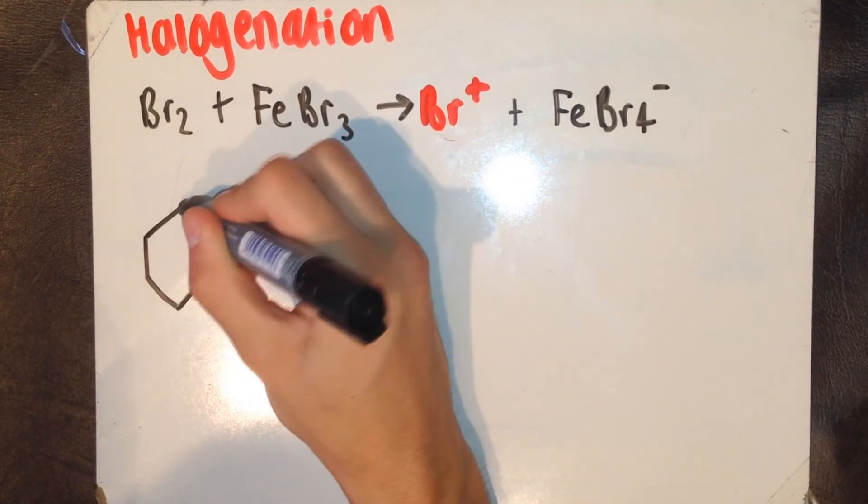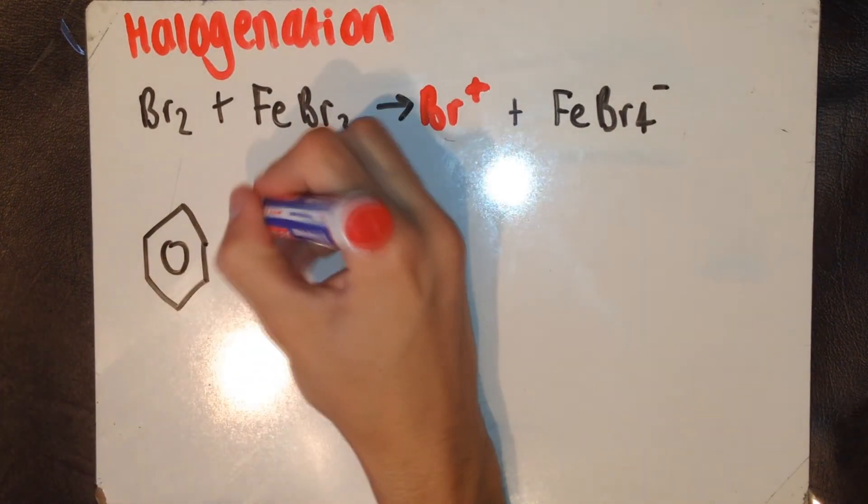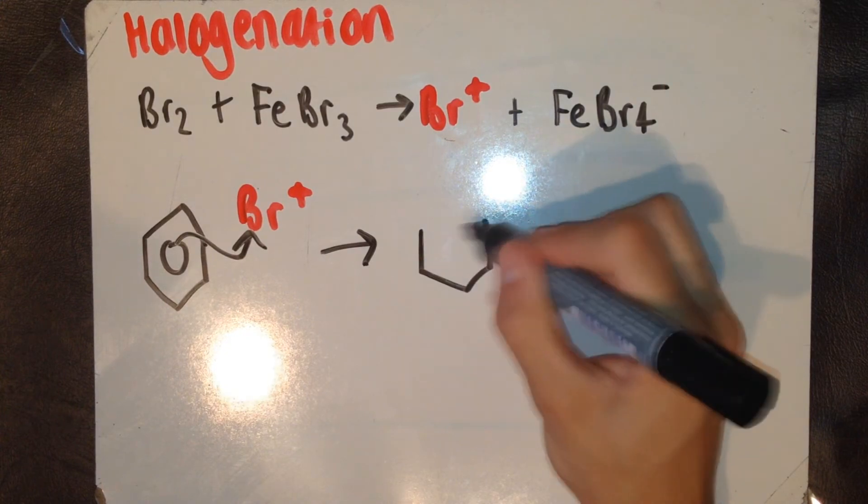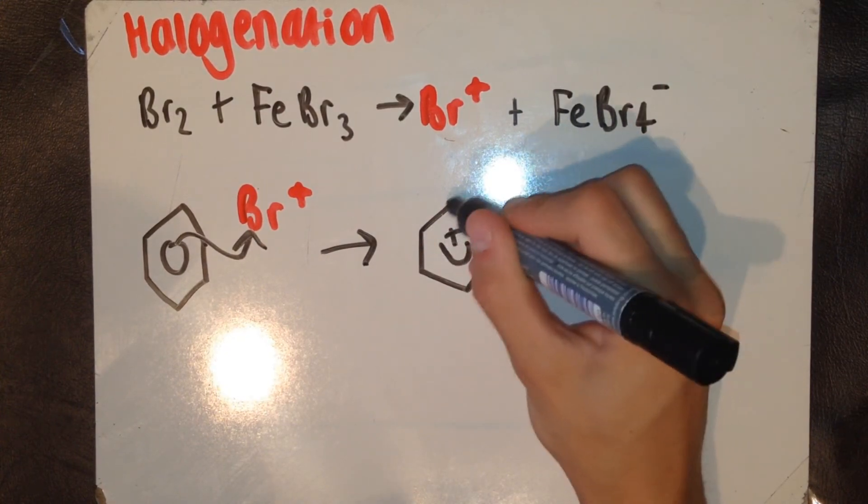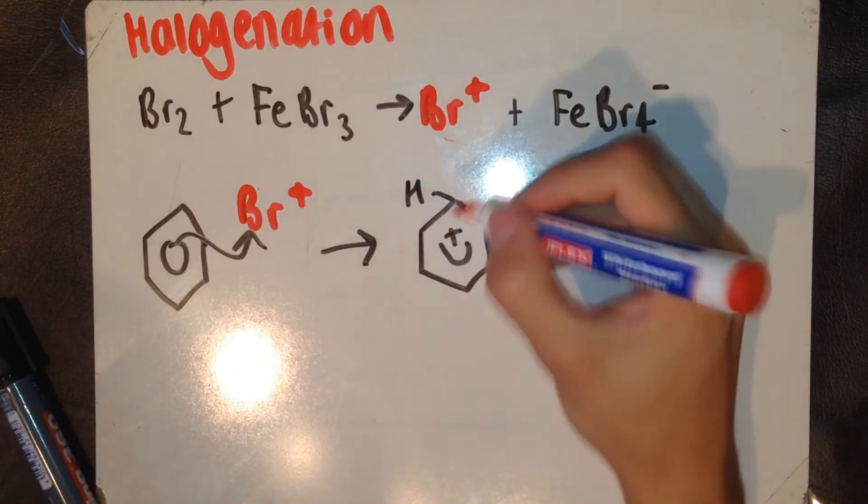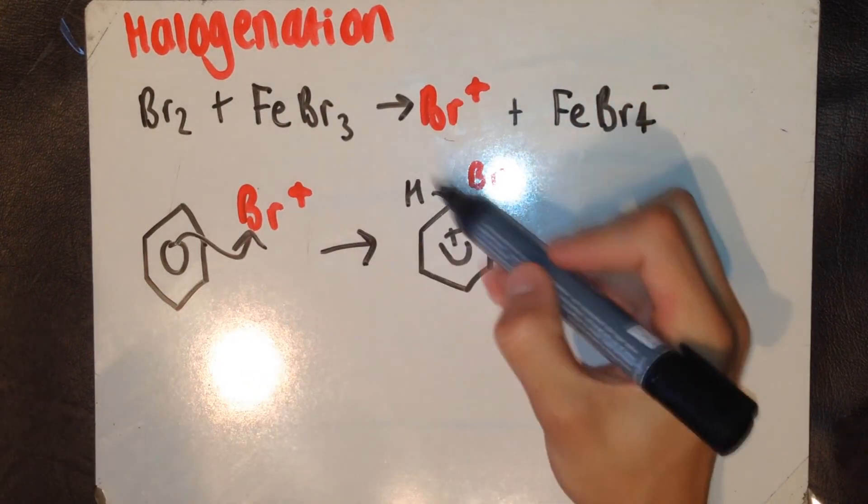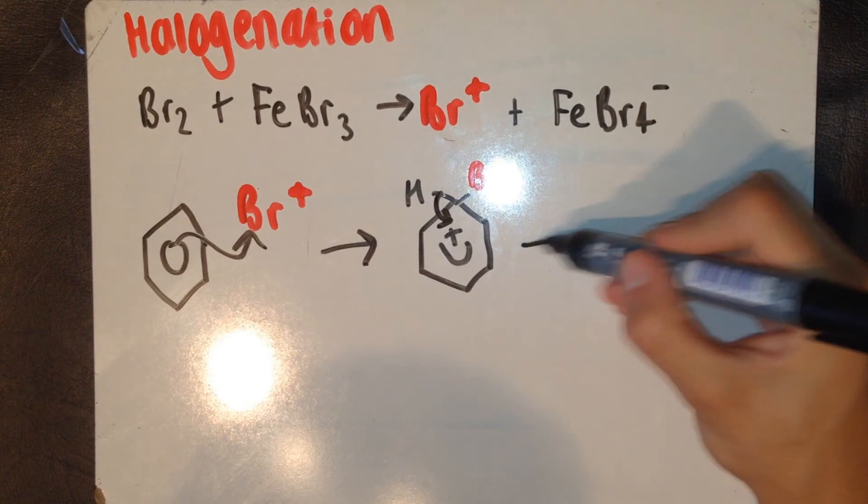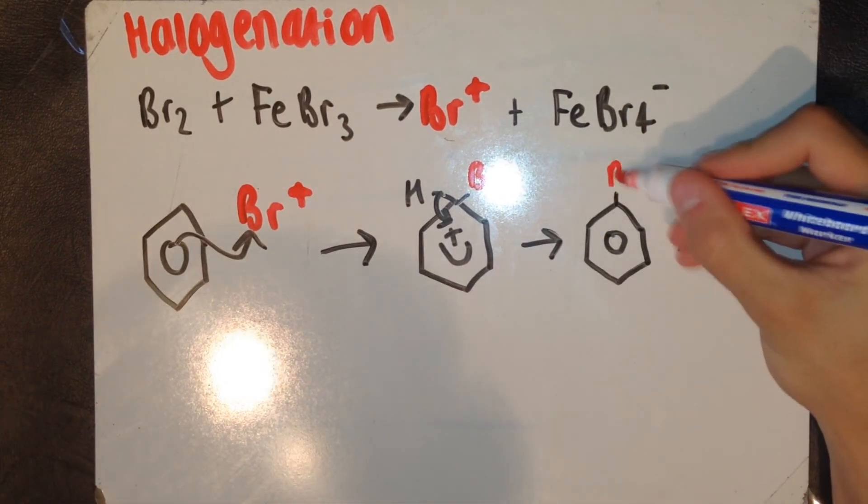So, once again, the electrophile, in this case Br+, accepts a pair of pi electrons from the delocalised ring. The intermediate, containing both the hydrogen atom and the electrophile, forms. The delocalised electron cloud has been disrupted. The carbon to hydrogen bond rapidly breaks, and the two electrons forming that bond rejoin the delocalised ring. And then, finally, we have our products.